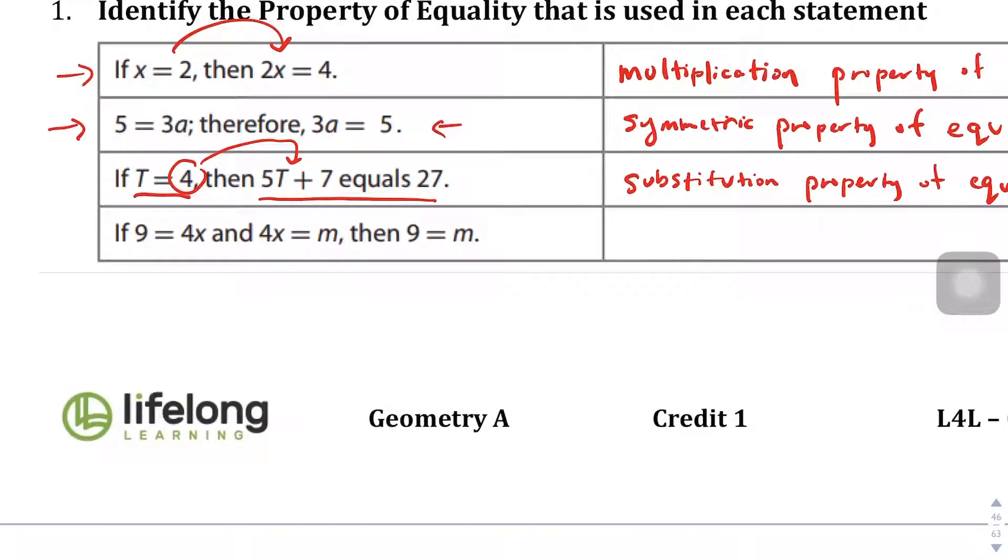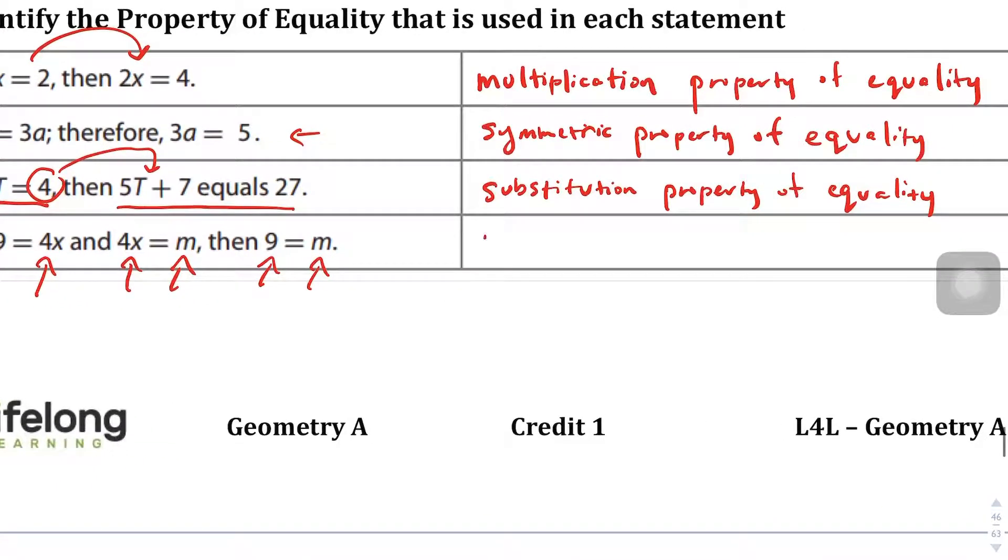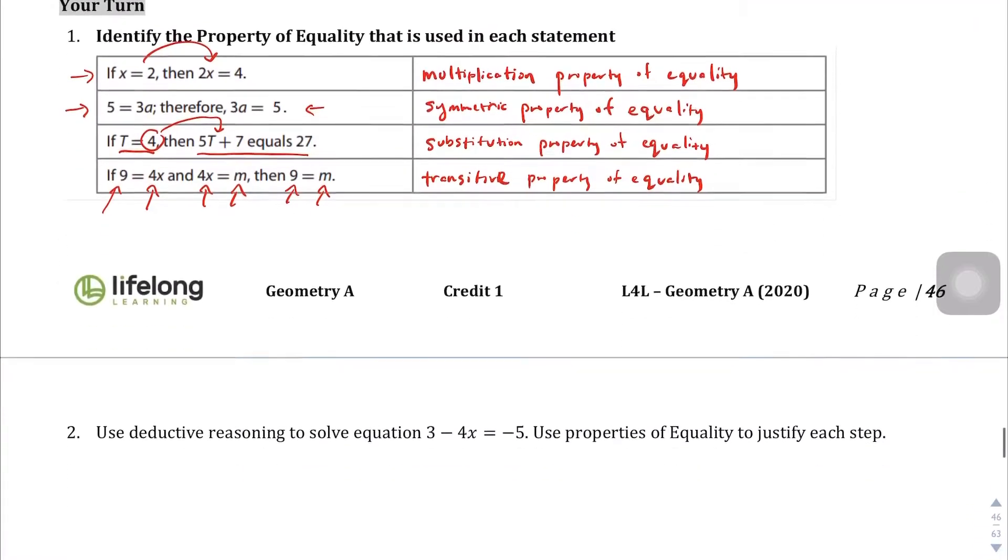And here, 9 equals 4x, 4x equals m, therefore 9 equals m. You can see there is a logical progression to this. a equals b, b equals c, therefore a equals c. This is the classic transitive property of equality.